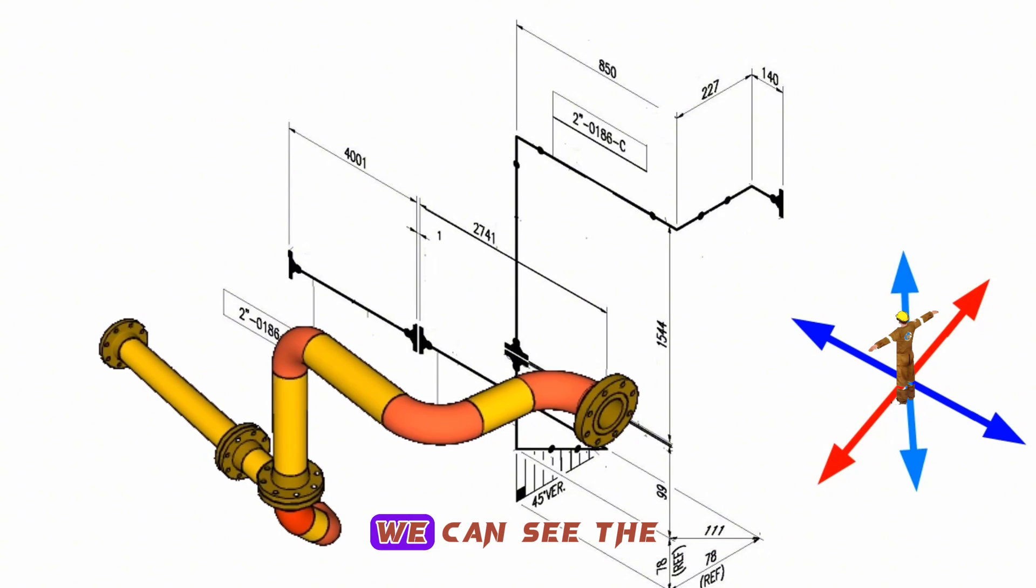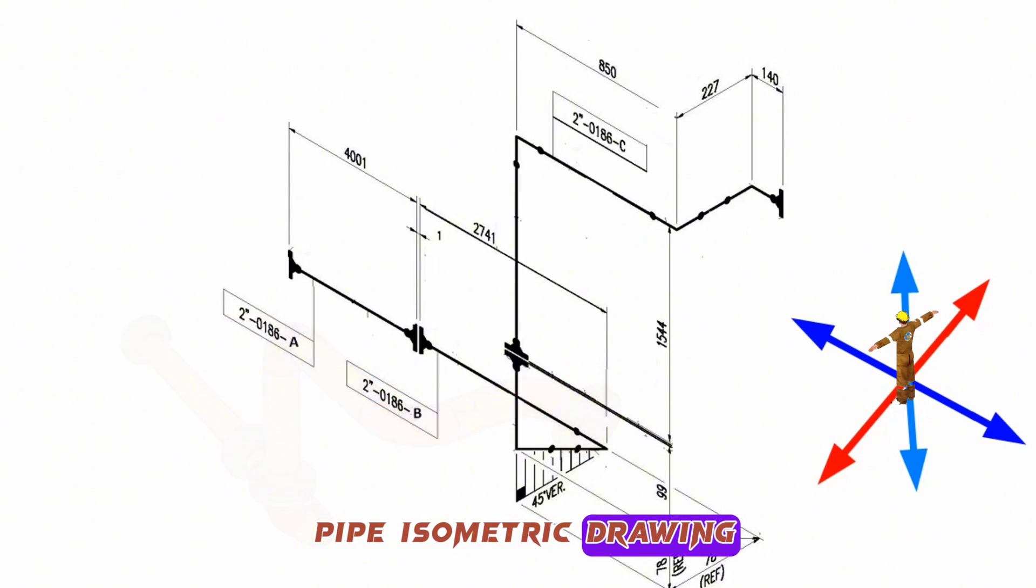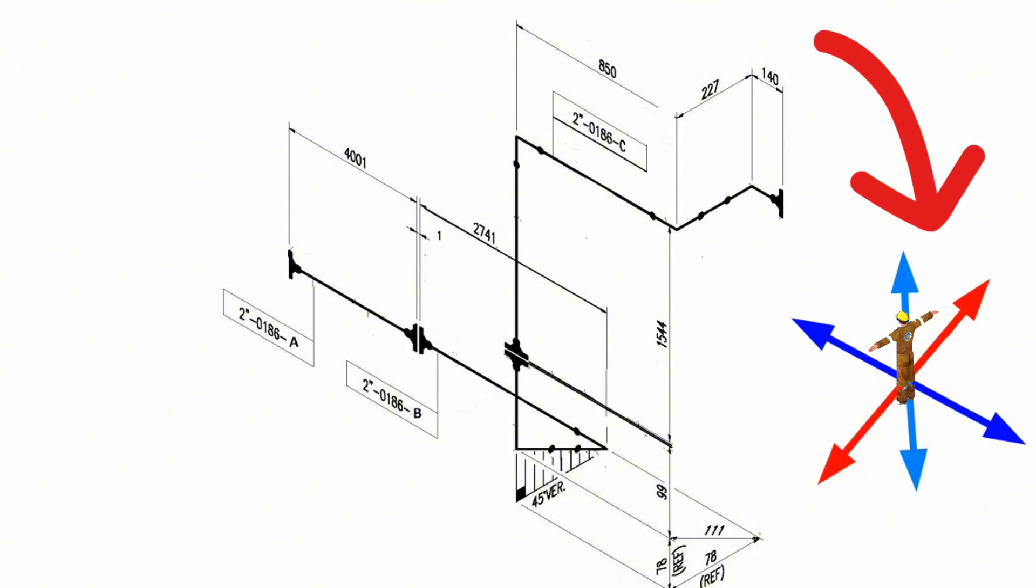In this drawing, we can see the pipe isometric drawing and arrows showing the directions. There are six directions here.